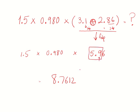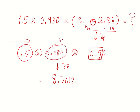Now back to sig fig rules. For the multiplication step, the rule is fewest sig figs. I count sig figs: 2.1 has two sig figs; 0.980 has three sig figs (we count that zero); and the number in the box has two sig figs. Fewest sig figs means two. I draw a box for two sig figs.